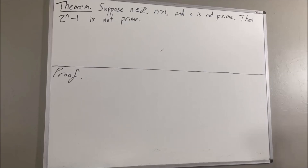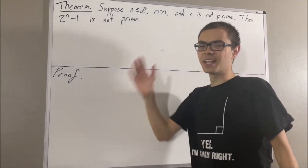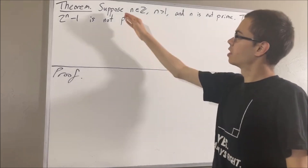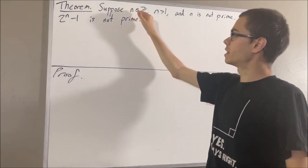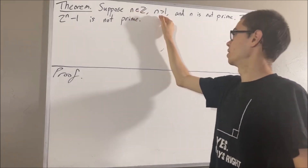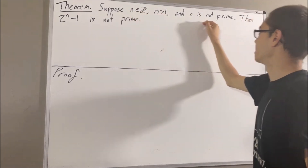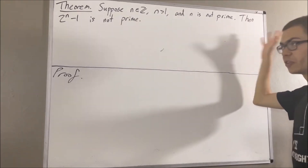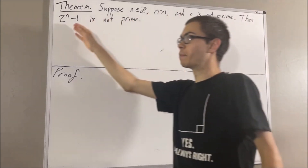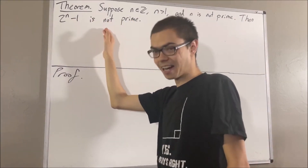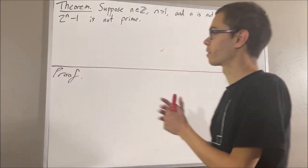Hello! In this video, we are going to prove the following theorem. Suppose n is an integer where n is greater than 1 and n is not prime. Then, 2 to the power of n minus 1 is not prime.